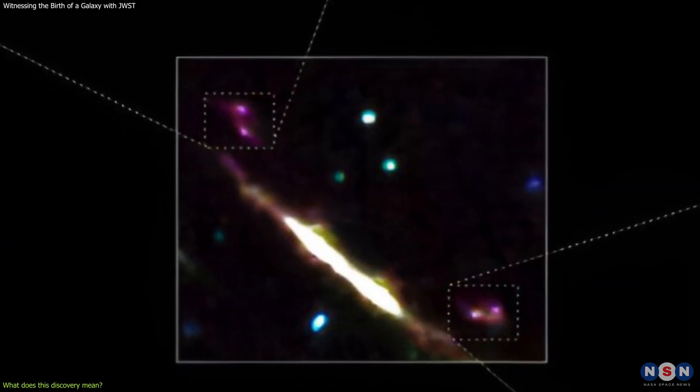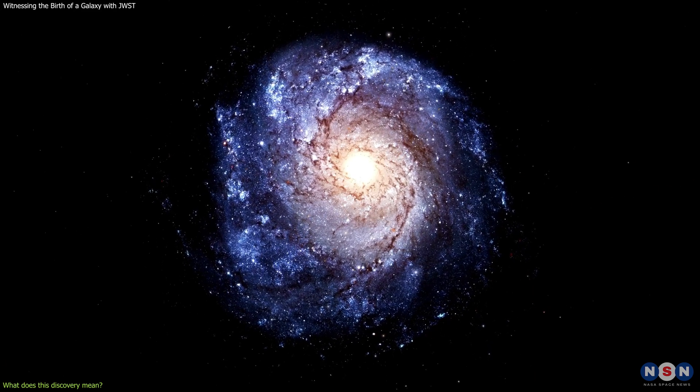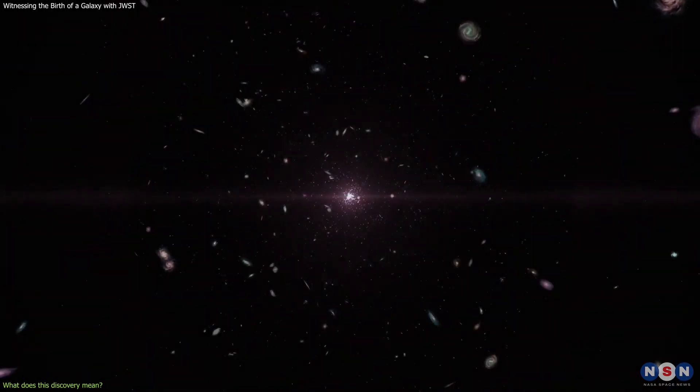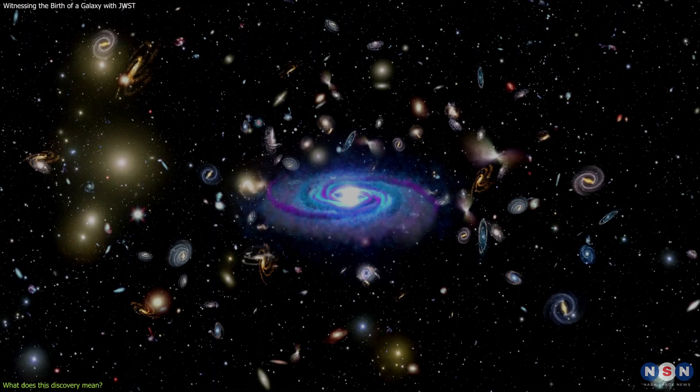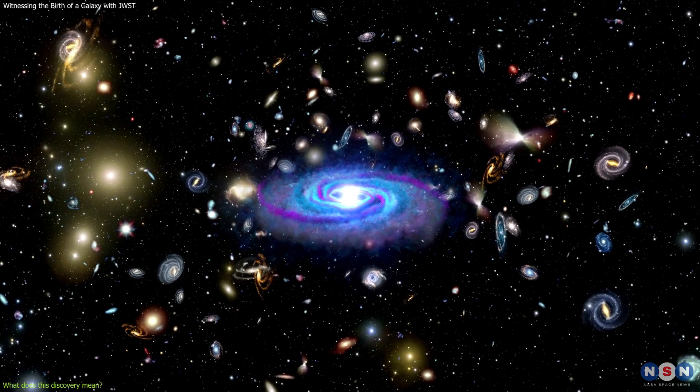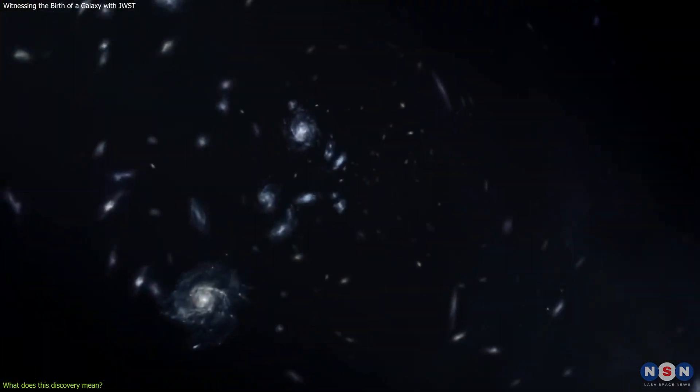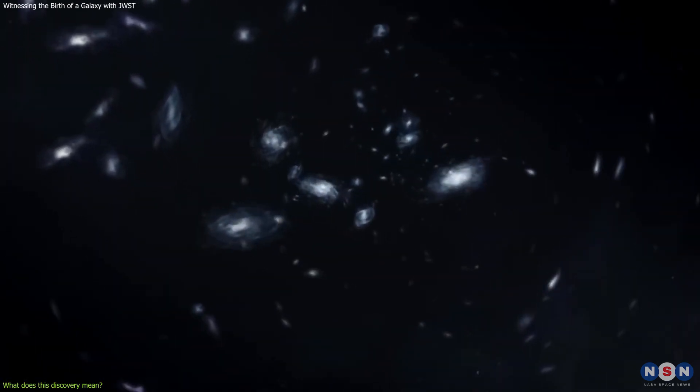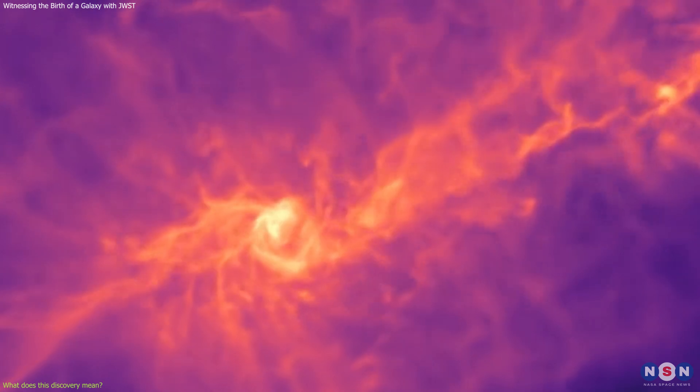However, this discovery also raises some questions and challenges for our current models of galaxy formation and evolution. For one thing, it is not clear how these two smaller galaxies managed to merge so quickly and efficiently, given the low density and high velocity of the universe at that time. It is also not clear how common or rare these merger-driven galaxies are in the early universe, and how they compare with other types of galaxies that formed through different processes, such as gas accretion or fragmentation.